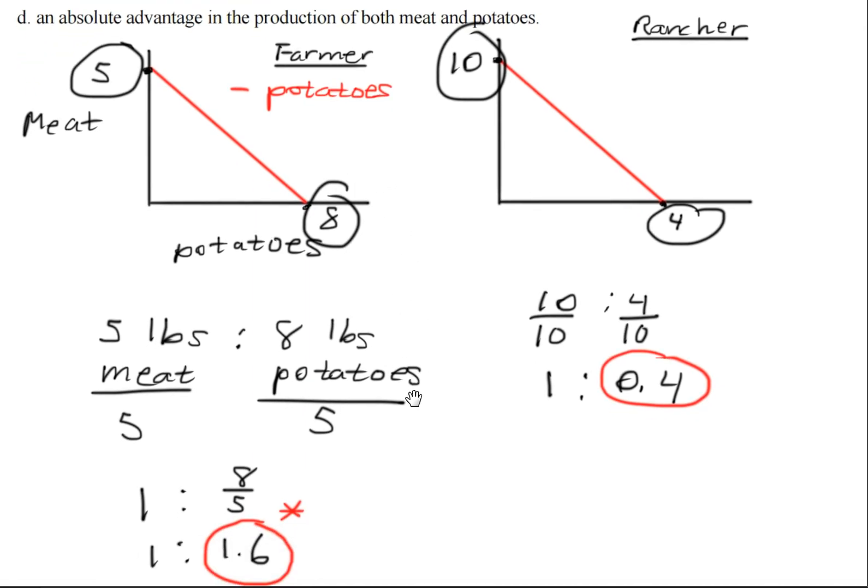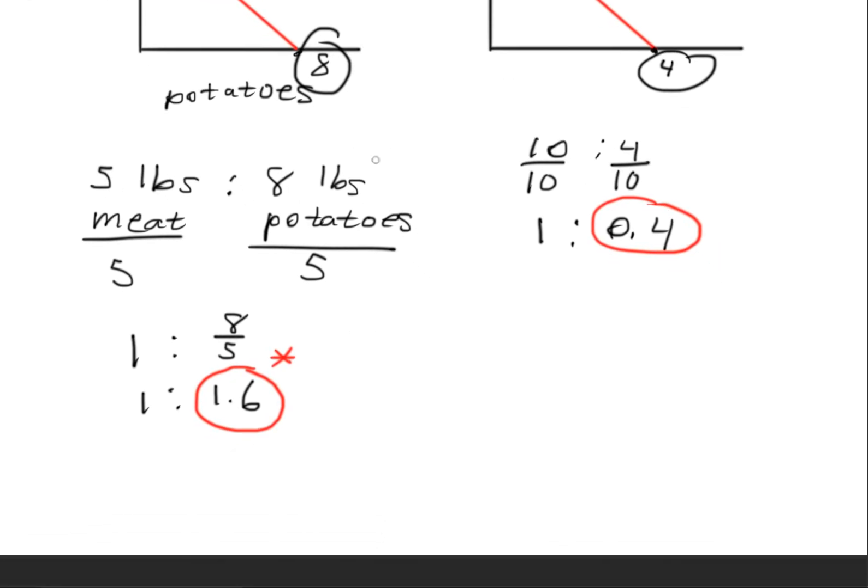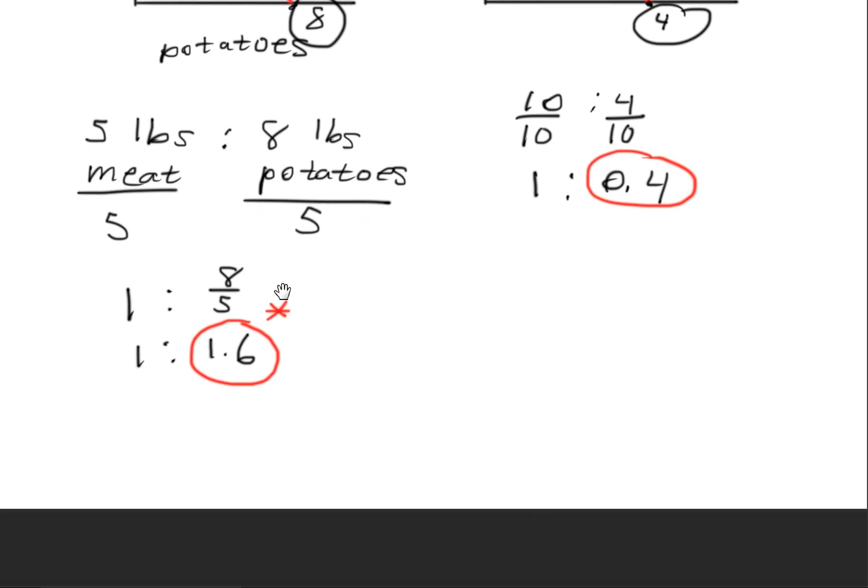We can find out who has the other comparative advantage by doing the reciprocal of this quantity. But what we'll do is set up another ratio. We'll have 5 to 8. And just for the sake of not getting confused, I will erase this right here.